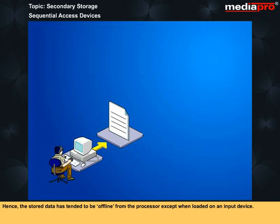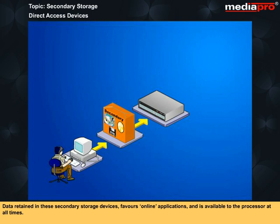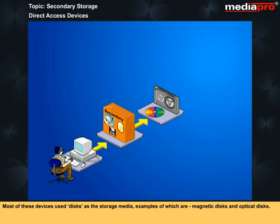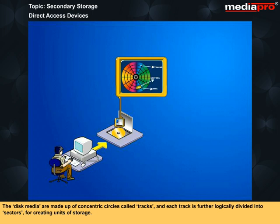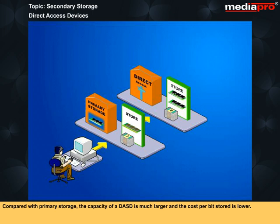Unlike sequential access devices, direct access storage devices or DASD allow data to be accessed exactly from the point where it was actually stored, irrespective of what data appeared before it. Data retained in these secondary storage devices favors online applications and is available to the processor at all times. Most of these devices use disks as the storage media, examples of which are magnetic disks and optical disks. The disk media are made up of concentric circles called tracks, and each track is further logically divided into sectors for creating units of storage. The data is stored along these tracks as tiny invisible polarized spots. Compared with primary storage, the capacity of a DASD is much larger and the cost per bit stored is lower.